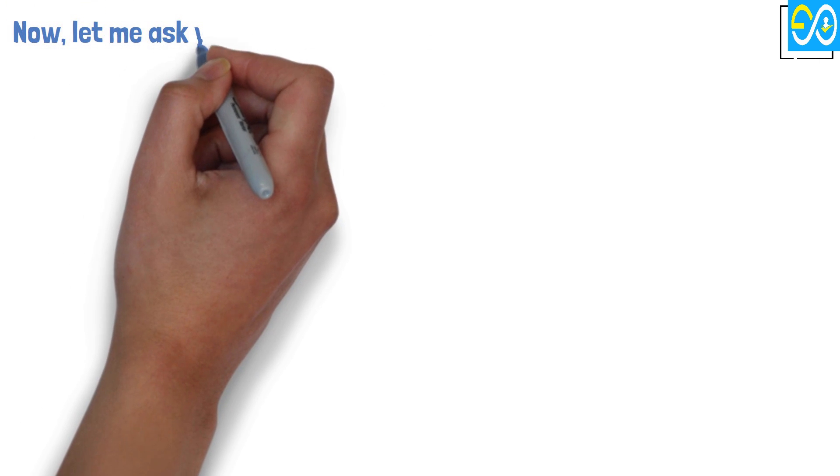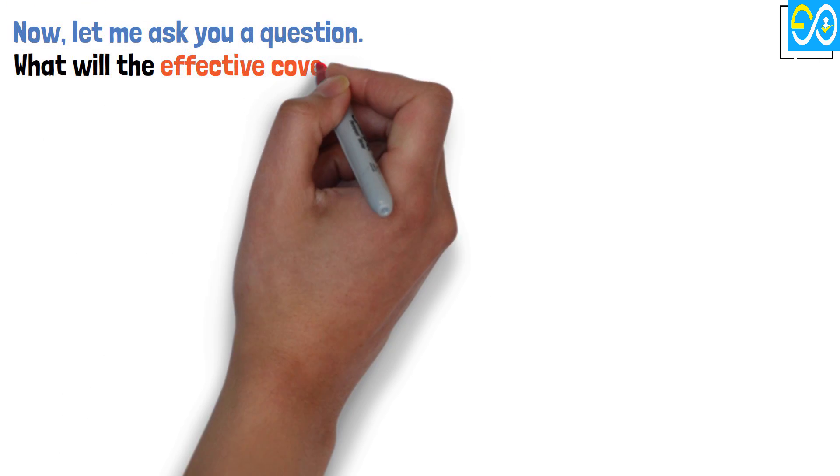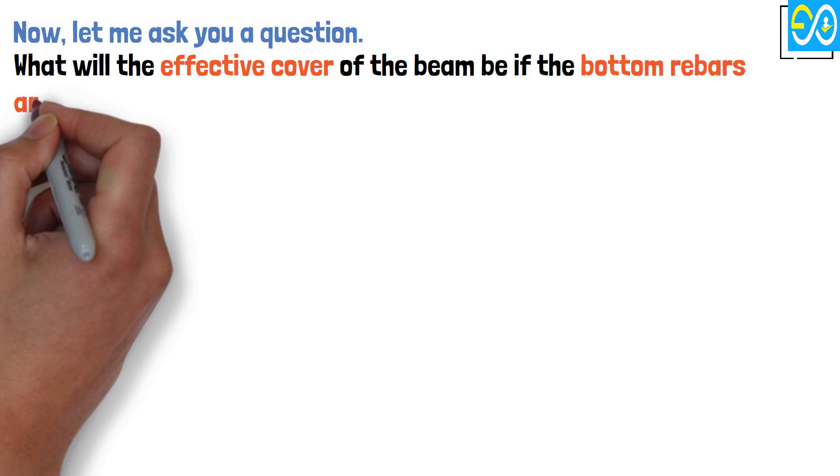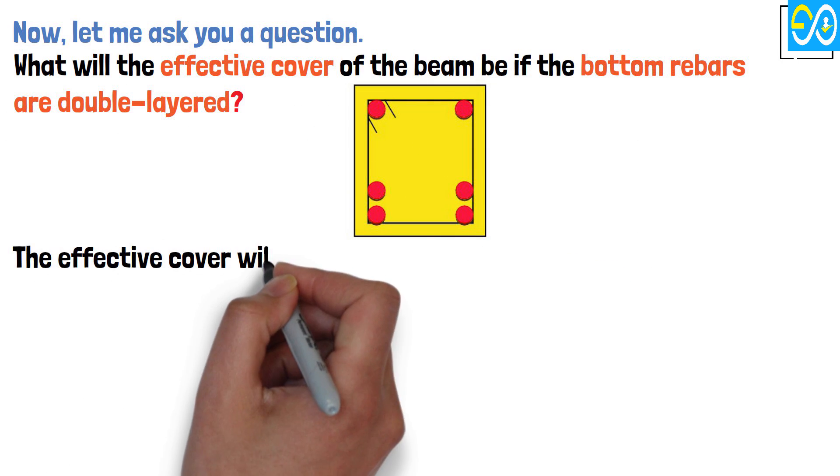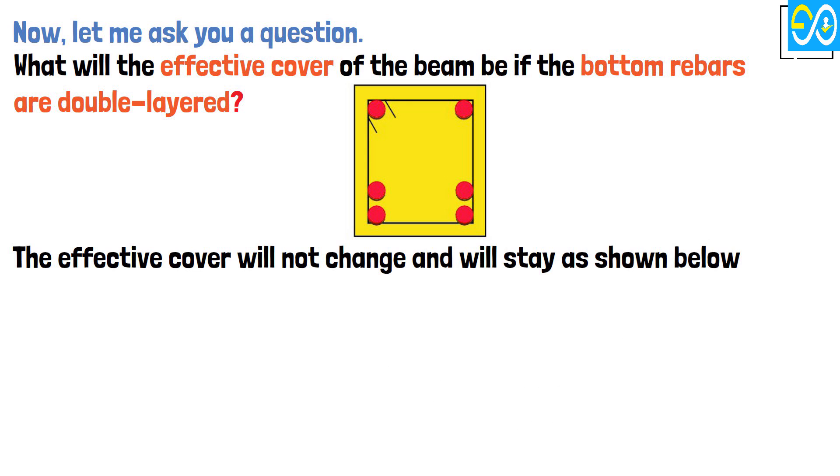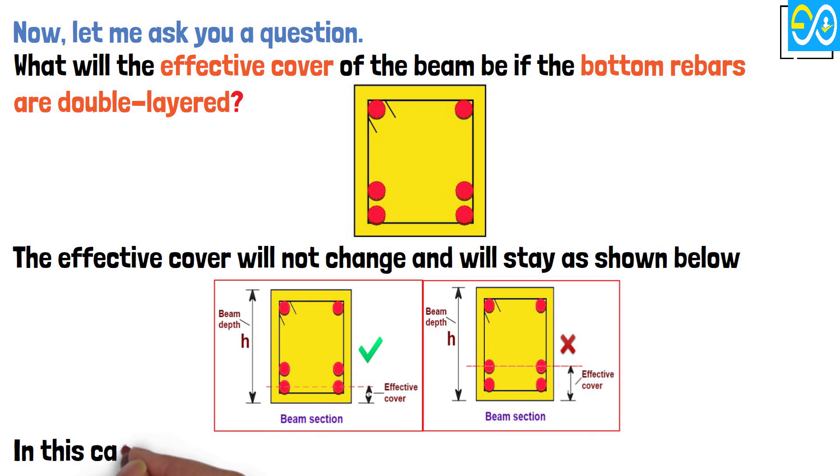Now, let me ask you a question. What will the effective cover of the beam be if the bottom rebars are double-layered? The effective cover will not change and will stay as shown below. In this case, the effective cover equals 43 mm.